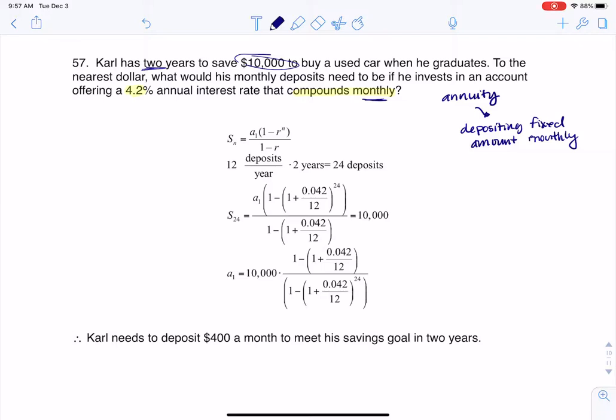Now to just get a quick and dirty estimate, if you were going to take 10,000 and divide it by 24, let me just check this on my calculator.